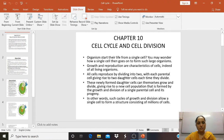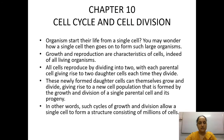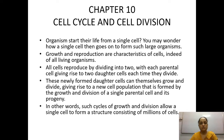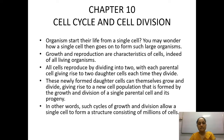Hello everyone. Today we are going to start with our new topic and a new chapter — that is the cell cycle and cell division, which is chapter number 10 of Class 11th NCERT. Cell division is very much required so that the number of cells can be increased. In the beginning, each organism is in the form of a single cell, and how a single cell goes on to form such a large organism — that is all because of cell division. Growth and reproduction are the characteristics of cells.